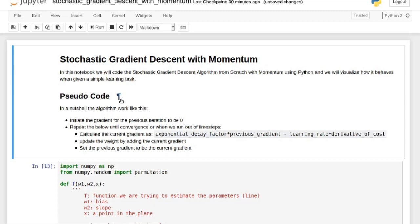So now let's look back to an example with the Jupyter notebook. If you prefer to look at the code yourself, the link is in the description. So the code goes like this. First thing we do is we initiate the gradient for the previous iteration to be zero because there was no previous iteration.